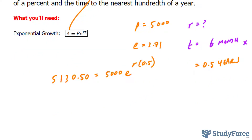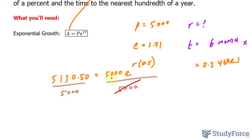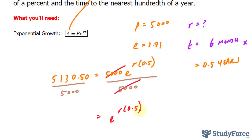Let's go ahead and solve for R. The first thing I want to do is divide both sides by 5,000. That will cancel out the 5,000 on the right side. I'll leave the left side as is — I'm not going to evaluate it right now because I'm still working on the right side. We have E to the power of R times 0.5.